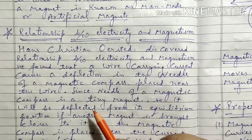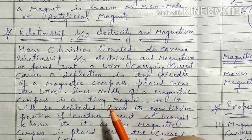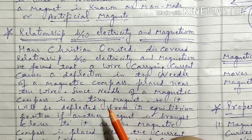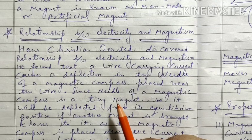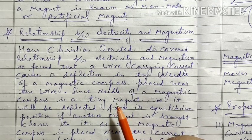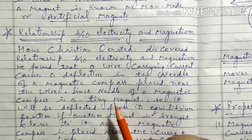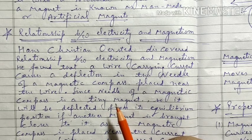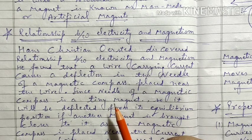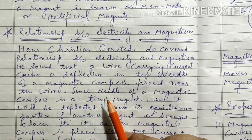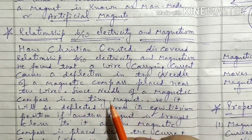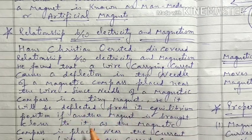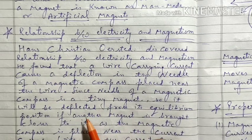The needle of the magnetic compass is a tiny magnet, made up of a magnet with north and south poles. Like poles (north-north or south-south) repel each other, and unlike poles (north-south) attract each other. Since the needle of the magnetic compass is a tiny magnet, it will be deflected from its equilibrium position if another magnet is brought closer to it. The current carrying wire acts as that other magnet.